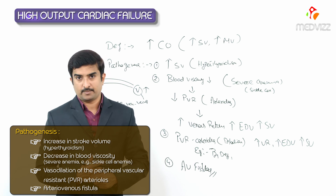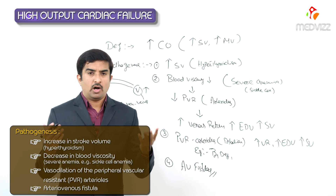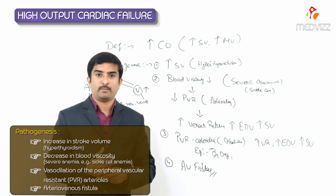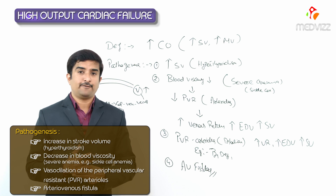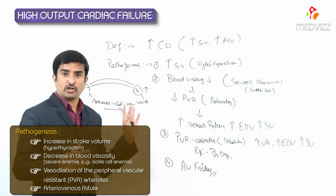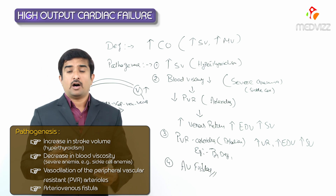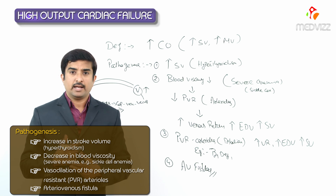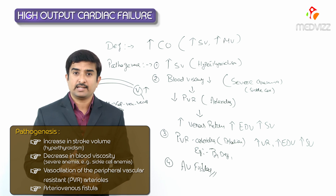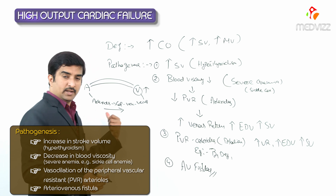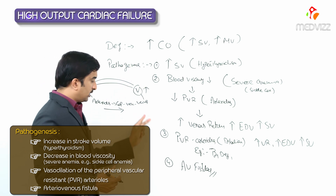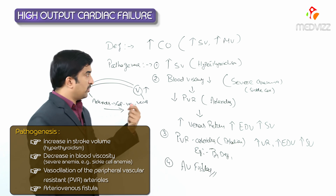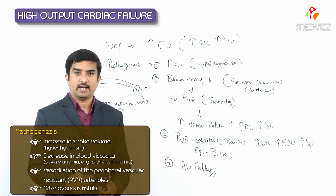Arteriovenous malformations can be seen in conditions like knife wounds, which are the most common cause of abnormal arteriovenous communications, and in surgical shunts for hemodialysis. So these are the four important pathological conditions responsible for the development of high output cardiac failure.